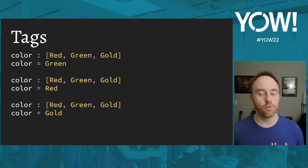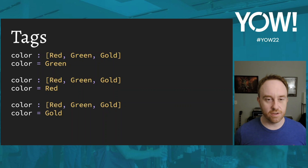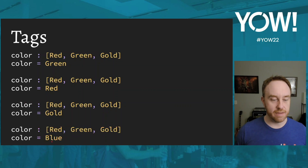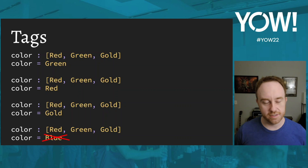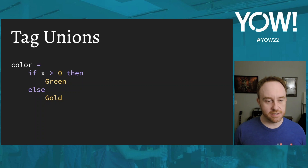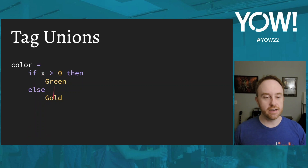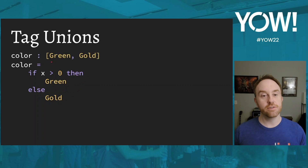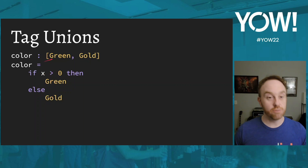If I annotate color as [Red, Green, Gold] and then assign Blue, I get a type mismatch error. An important feature of tag unions is that they accumulate in conditionals. If I write 'color = if x > 0 then Green else Gold', the compiler infers the type as [Green, Gold] — because either branch could be taken. This automatic accumulation across branches is a key characteristic.